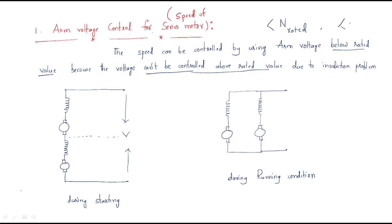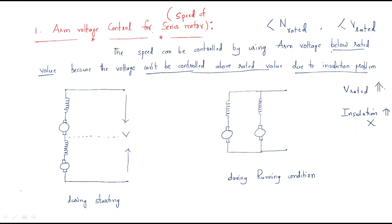The reason is the insulation problem. Up to the rated voltage we provide insulation, but if the voltage increases more than rated value, providing insulation becomes difficult. That is why the armature voltage control method is only applicable for below rated speeds.